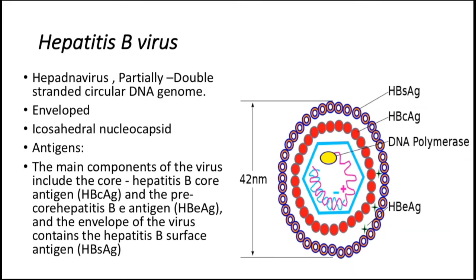We continue with the hepatitis viruses, now talking about hepatitis B virus infections. The viral genome of hepatitis B virus consists of a partially double-stranded DNA, usually with a short single-stranded piece. It comprises usually 3,200 nucleotides, making it the smallest DNA virus known. It's from the family hepadnaviruses. The main components include the core hepatitis B core antigen and the pre-core hepatitis B antigen, which indicates infectivity and replication, and the envelope contains the hepatitis B surface antigen.